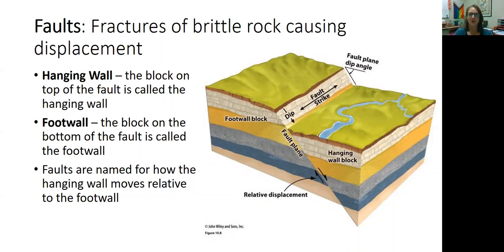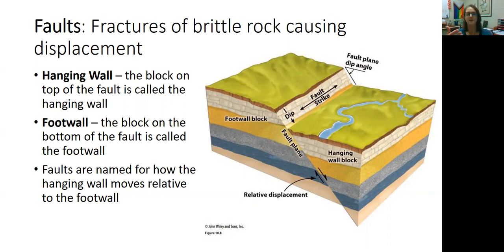Faults are cracks in Earth's crust, or fractures in the brittle rock of Earth's crust, that allow displacement on either side. The fault blocks on either side of that fault are going to be able to move up or down, left or right. The hanging wall is the block on the top of the fault, and the foot wall is the block on the bottom of the fault.